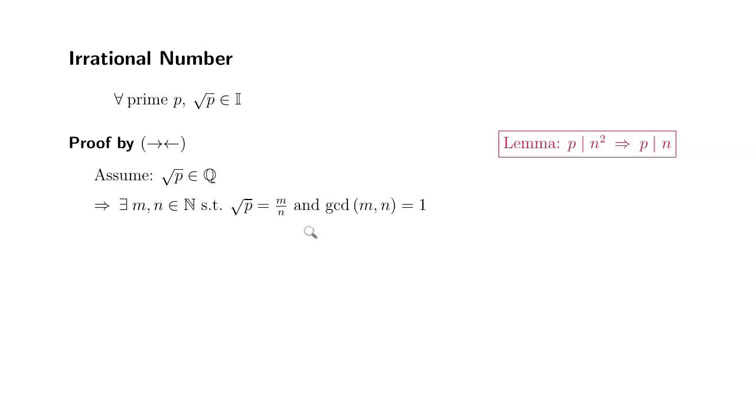And also I'm going to make an extra assumption. We're going to assume that the greatest common divisor of the numerator and the denominator is equal to 1.